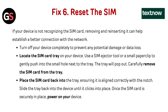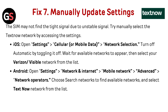Fix 6 — Reseat the SIM Card: If your device is not recognizing the SIM card, removing and reinserting it can help establish a better connection. Turn off your device completely. Locate the SIM card tray and use a SIM ejector tool or small paperclip to push into the small hole next to the tray. Carefully remove the SIM card, then place it back into the tray ensuring it's aligned correctly with the notch. Slide the tray back in until it clicks, then power on your device.